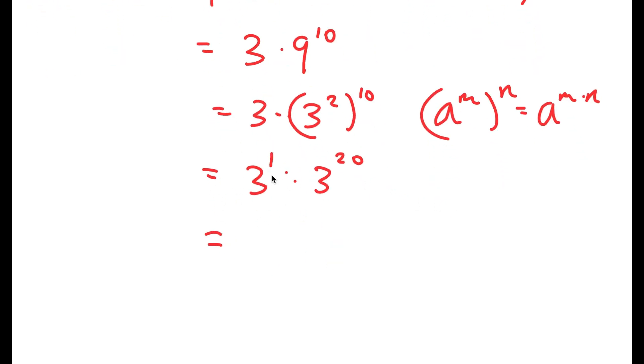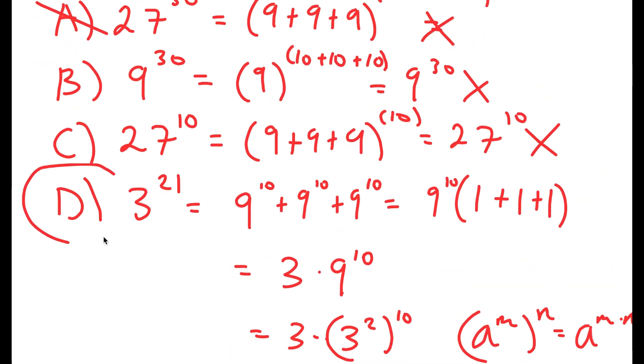And now 3 to the power of 1 times 3 to the power of 20 is equal to 3 to the power of 20 plus 1, which is equal to 3 to the power of 21. So this is the right answer, meaning D is the correct answer. Thank you.